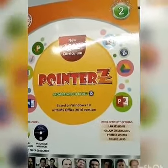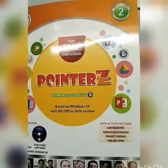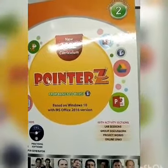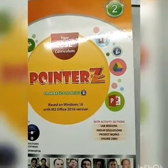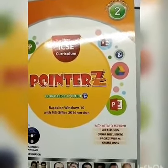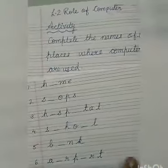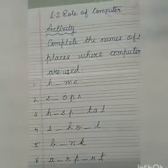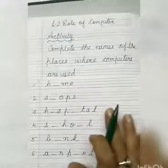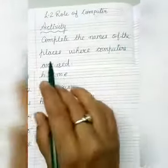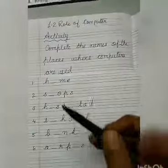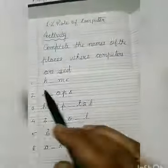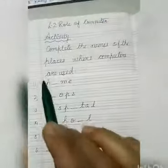Hello children, let's continue to read lesson 2 from the computer reader book. But before we start, let's do one activity which will help us to recall what we have learned yesterday. In this activity we have to complete the names of the places where computers are used. The names are written here but some of the letters are missing.